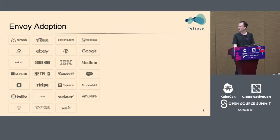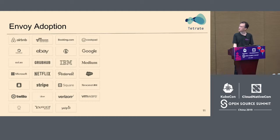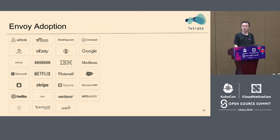Since Envoy was open sourced in 2016, it has received a lot of participation. Many companies have adopted Envoy. The adopters shown here are just a small sample. In China, many companies including Alibaba are also using Envoy.